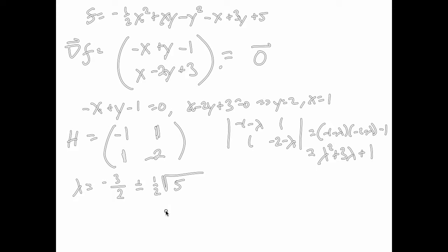So lambda equals negative 1.5 plus or minus square root of 5 over 2. The square root of 5 over 2 is less in absolute value than 1.5, so regardless of the plus or minus, the eigenvalue is always negative. Both eigenvalues are less than zero. Since they're both negative, the Hessian is negative definite, which tells us we have a maximum. That's the first, and easier, of the three examples.